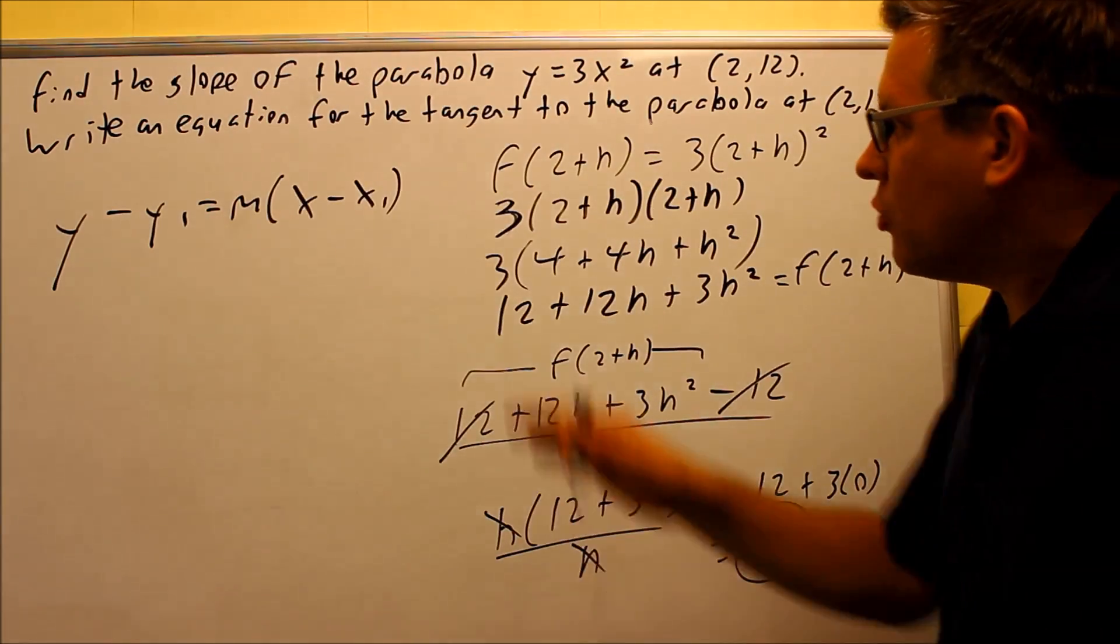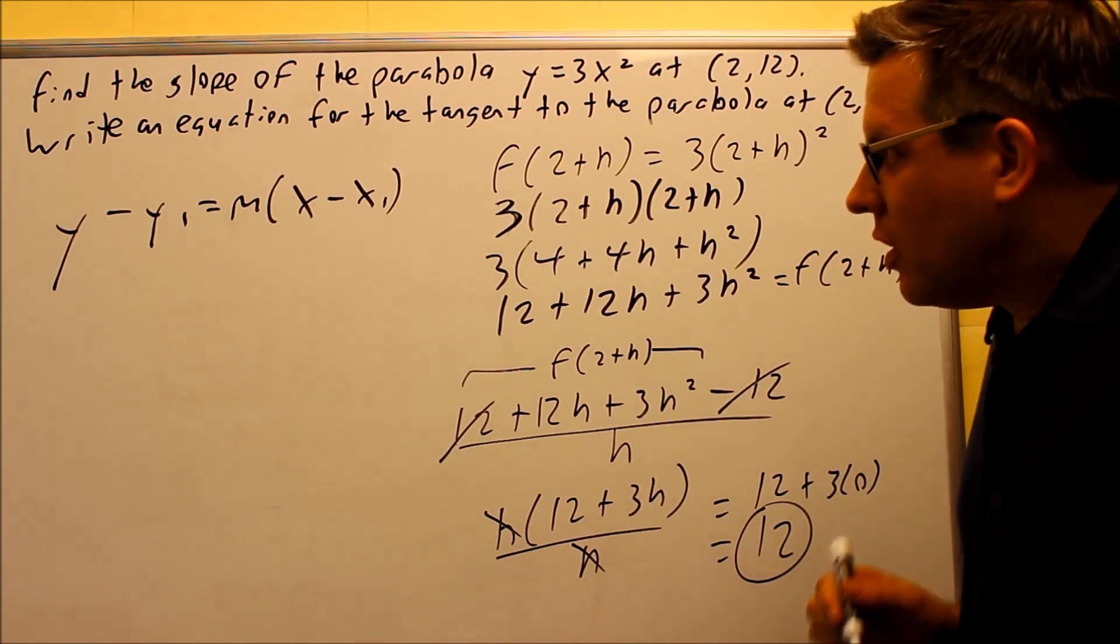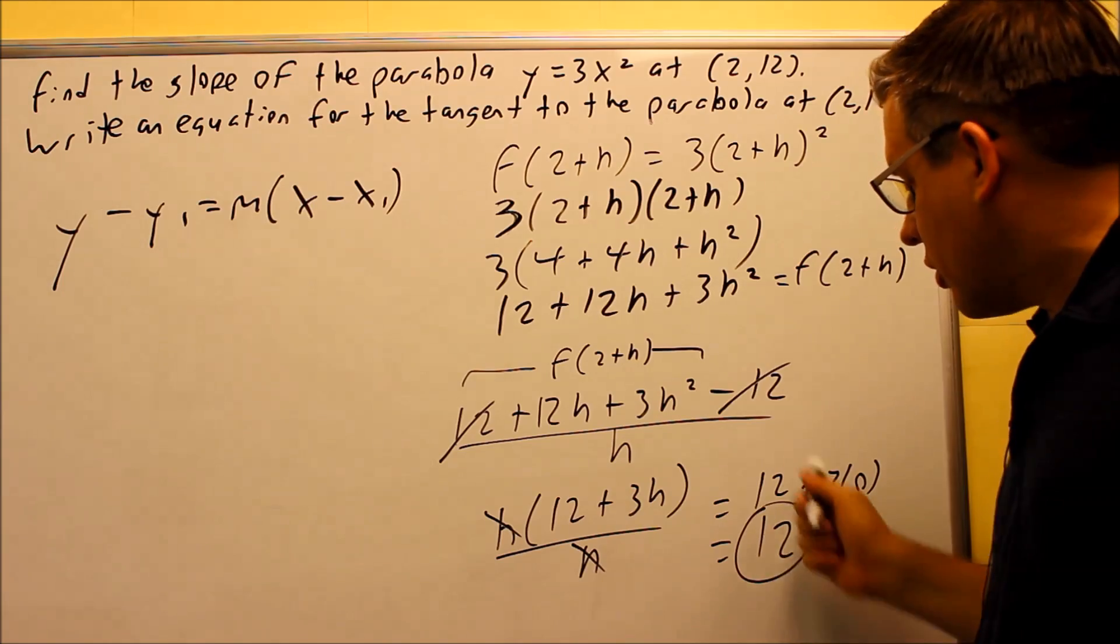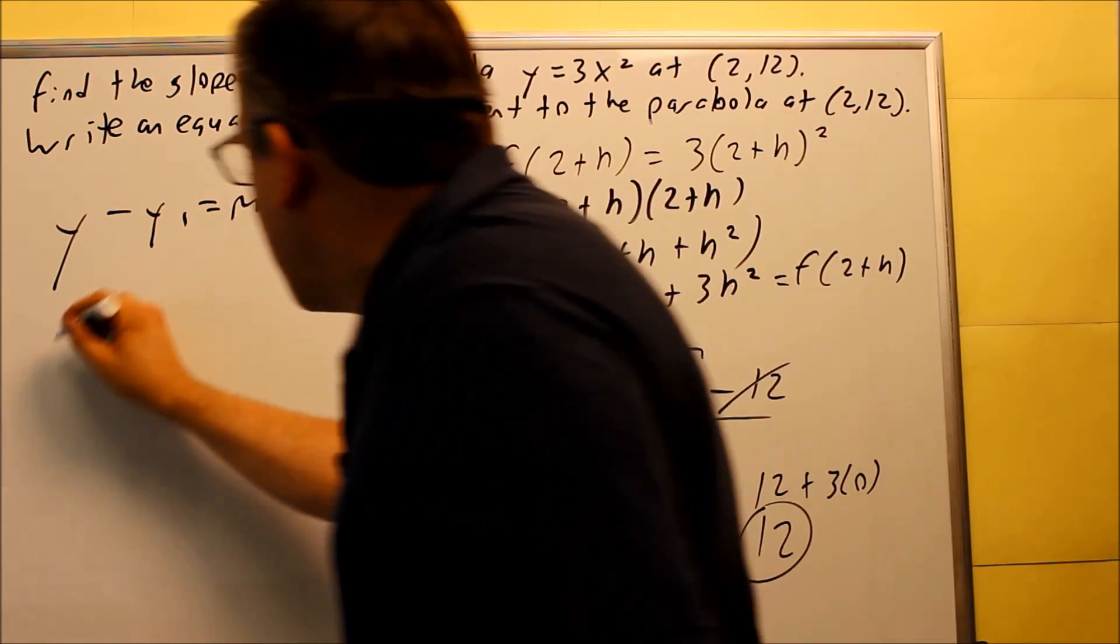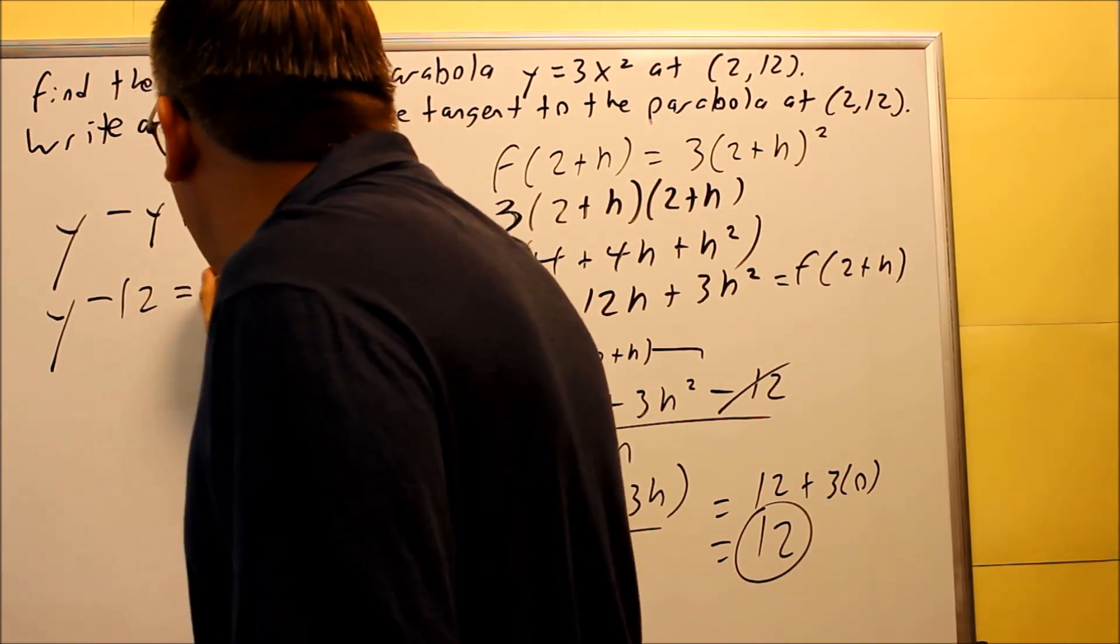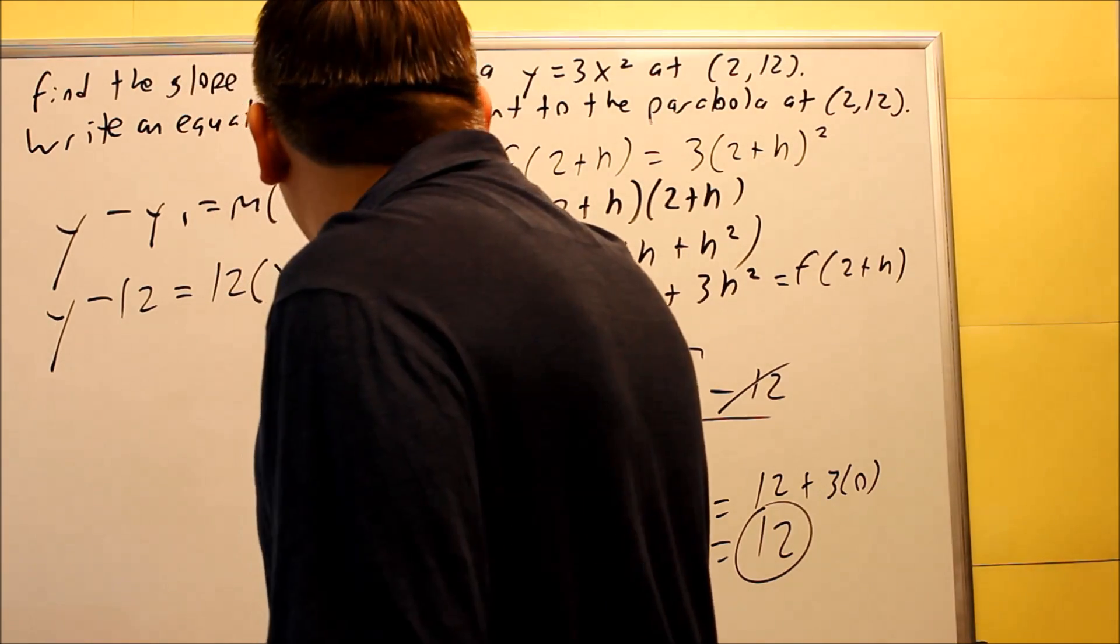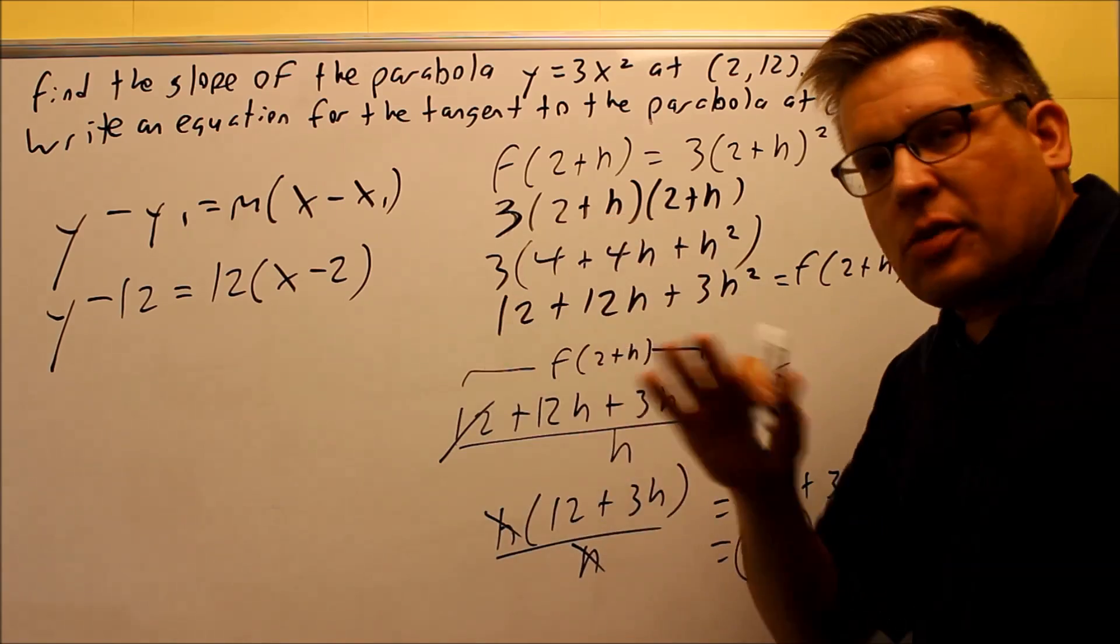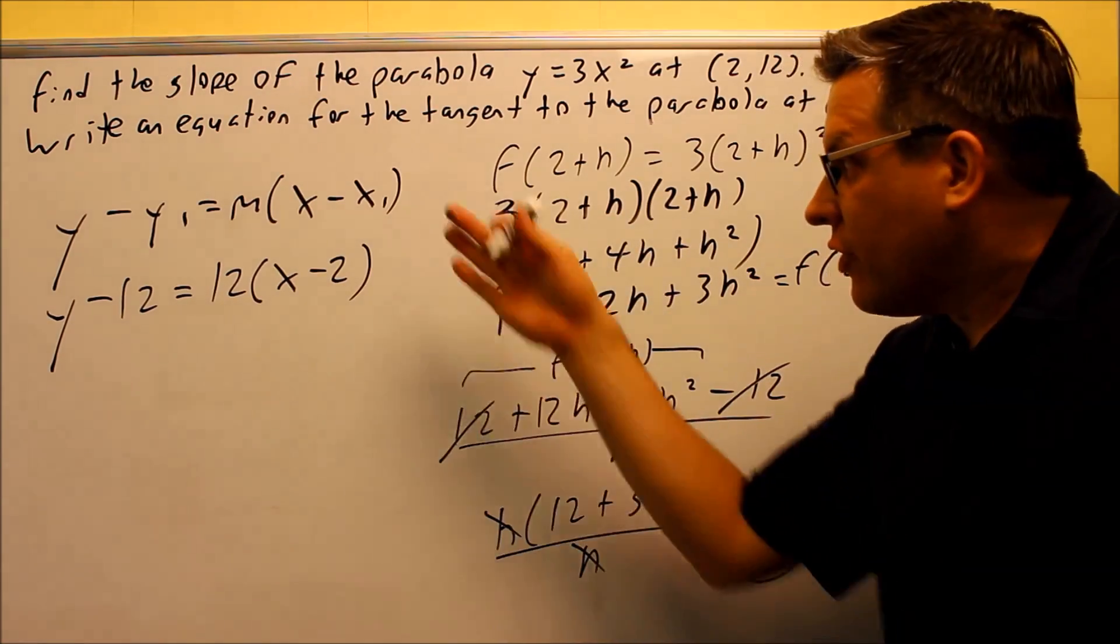So your x1 is 2, your y1 is 12, your slope, your m, is going to be 12. So let's plug that in. So y minus 12, 12 times x minus 2.